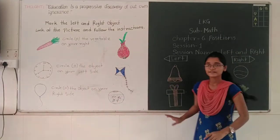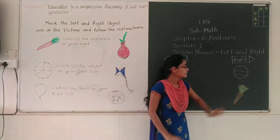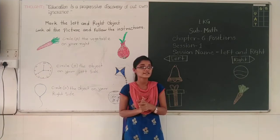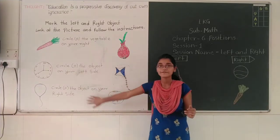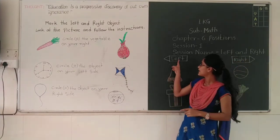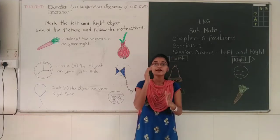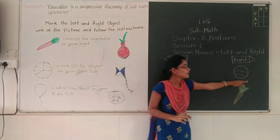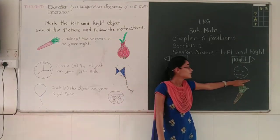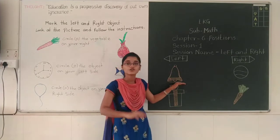Now students, look at this book. I have drawn two pictures here. Tell me which picture I have drawn on your left side. This is your left side and this is your right side. Left, right. So tell me which picture I have drawn on your right side — bell or ball? Yes, ball. The picture of ball I have drawn on your right side. And the picture of bell I have drawn on your left side.